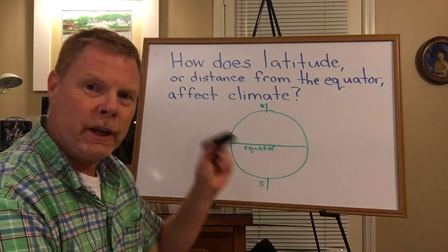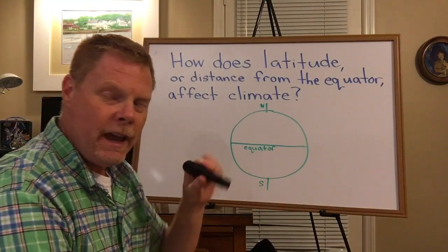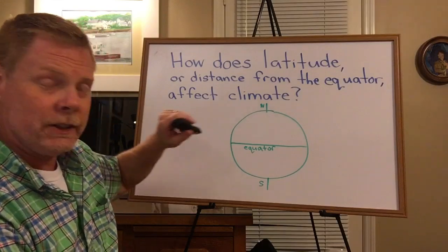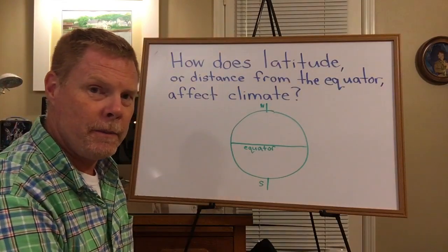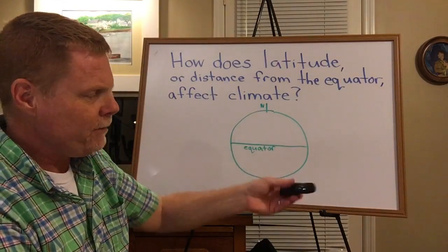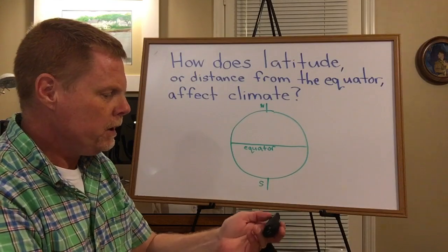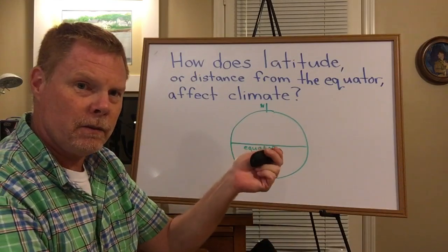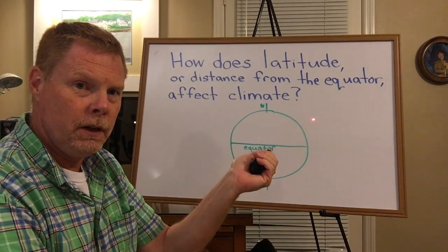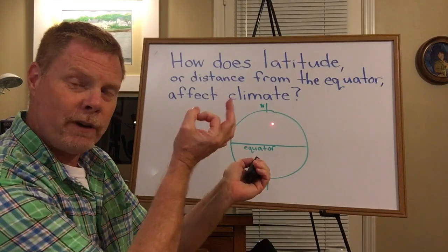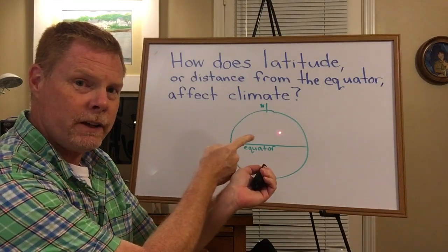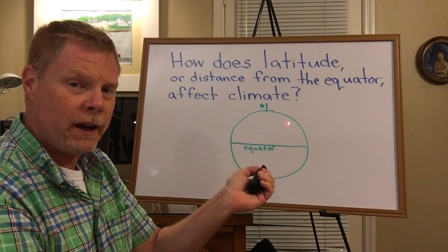Now in this model I'm going to use my laser pointer as a model of the Sun and the Sun's light shining on the earth. Now you'll notice that if I point my laser pointer straight at my board, you'll see that the dot is very focused, it's very small, it's very tight, and it's very bright.